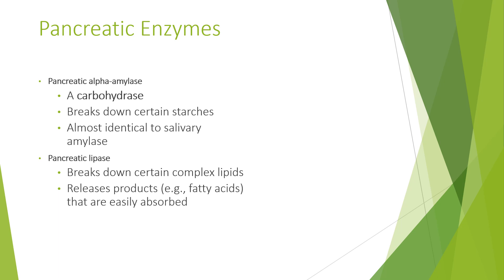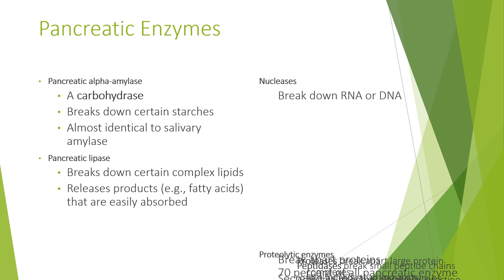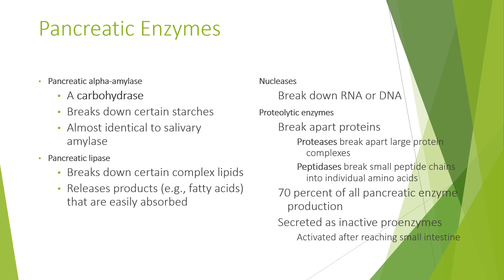Pancreatic enzymes include pancreatic alpha-amylase, which is a carbohydrase and breaks down certain starches — it is almost identical to salivary amylase. Pancreatic lipase breaks down certain complex lipids, and its products such as fatty acids are easily absorbed. Nucleases break down RNA or DNA. Proteolytic enzymes break apart proteins: a protease breaks apart large protein complexes, and peptidases break small peptide chains into individual amino acids. 70% of all pancreatic enzyme production is secreted as inactive proenzymes, which are activated after entering the small intestine.